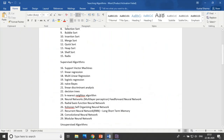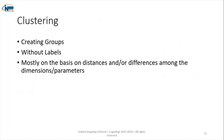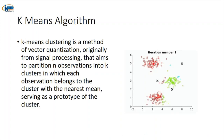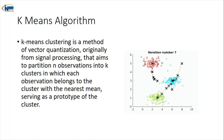Now moving to unsupervised learning algorithms. The thirtieth algorithm is K-Means clustering. Clustering means creating groups without labels — we don't have input-output pairs. Groups are formed on the basis of distances or differences among dimensions. In the diagram, we compare data points by color similarity and distance, putting similar ones together and separating different ones. K-Means categorizes data into groups by looking at parameters without any labeled input-output.